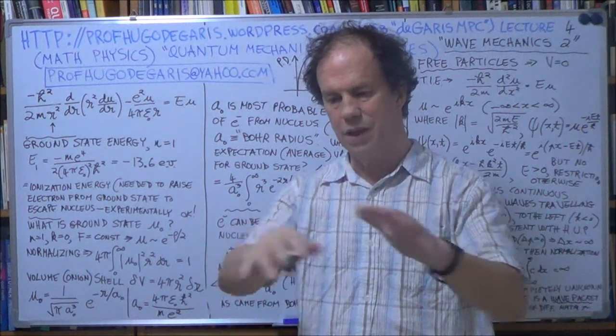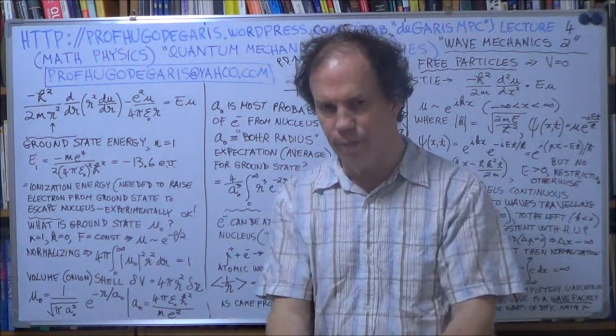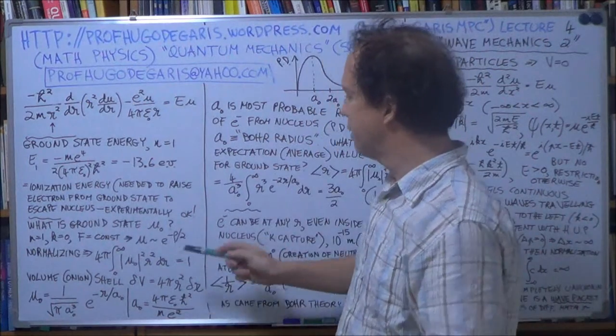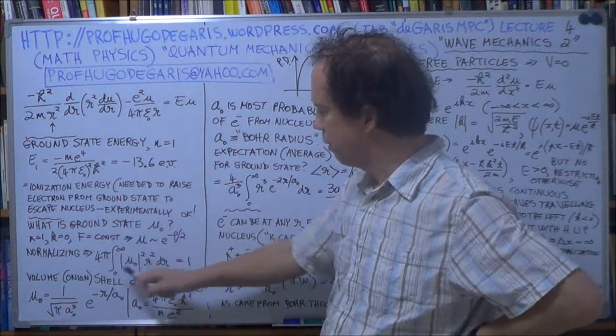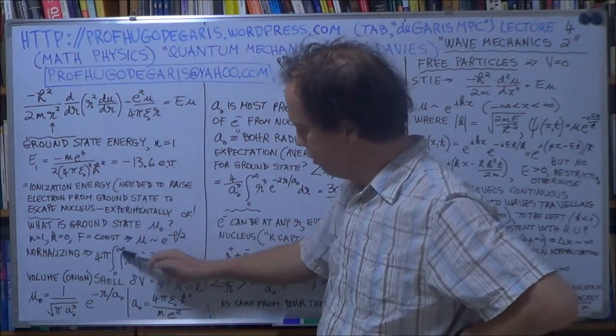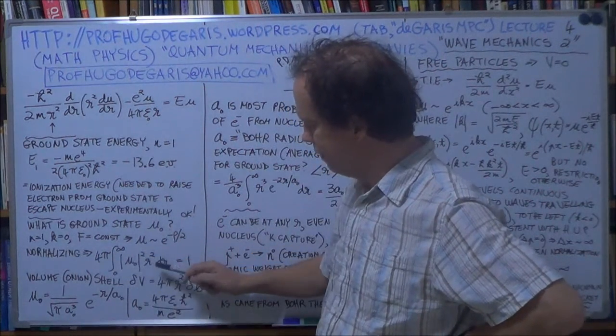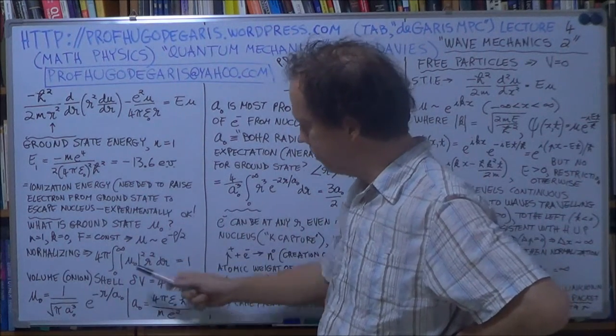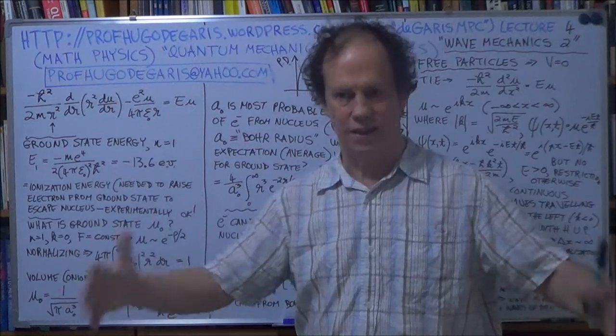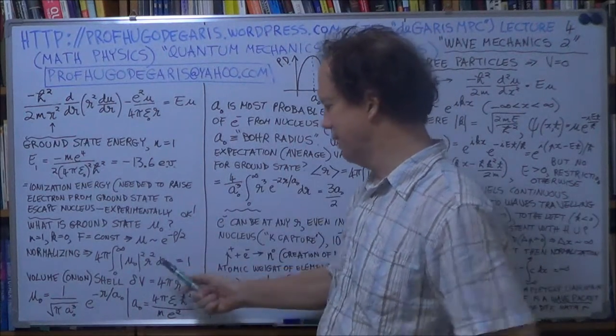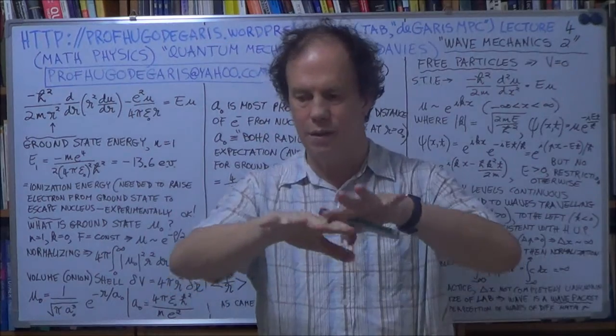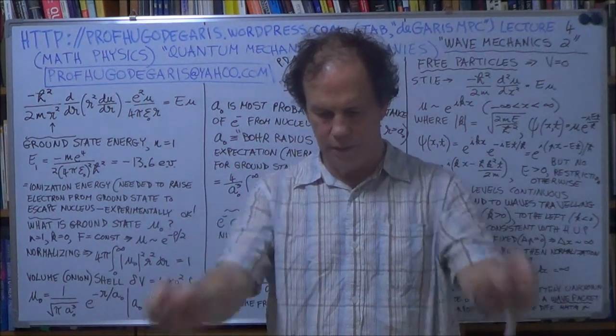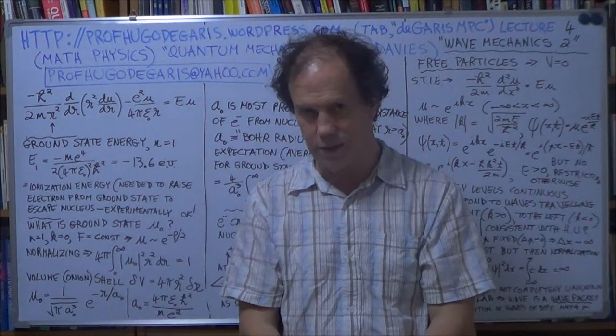So, the probability for that volume, divided by that volume, is the density, probability density. So to find the probability, the total probability being 1, here's your probability density multiplied by the volume. Well, I mean, we have to integrate it. It's not as simple as that. So the probability density is a function of the radius, that's all.